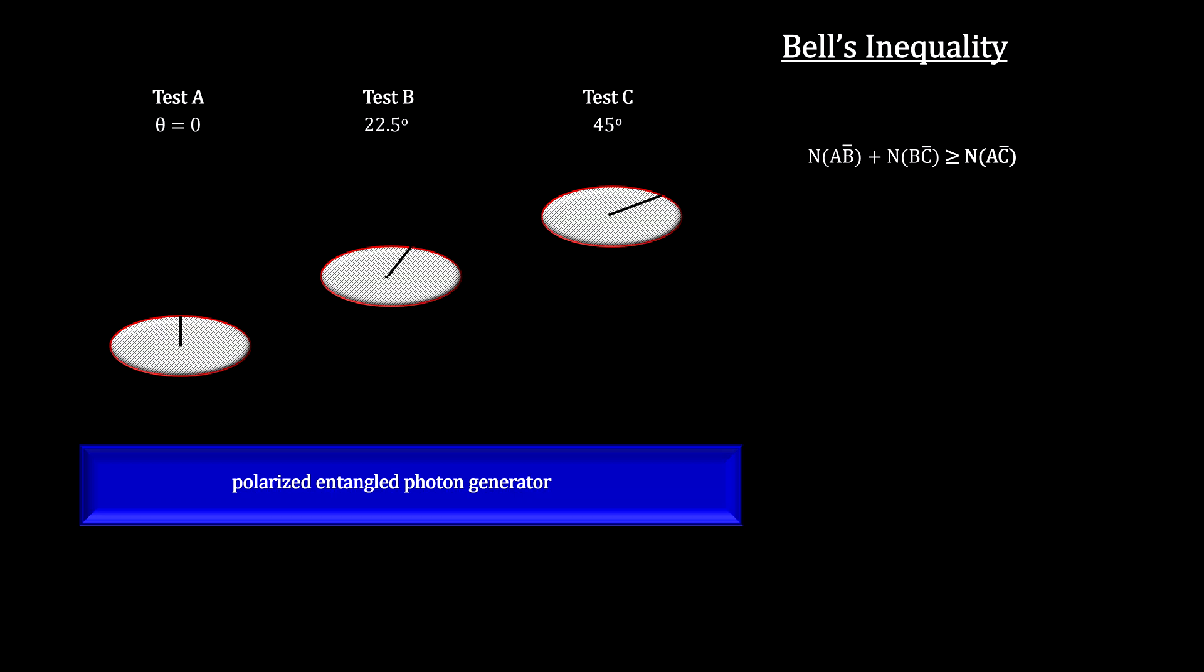We cannot yet entangle more than two particles, so the tests were done in three phases. In the first phase, they sent 100 vertically polarized entangled photons into vertically polarized lens A. All 100 passed through. None were blocked.